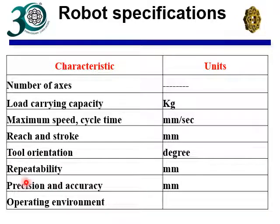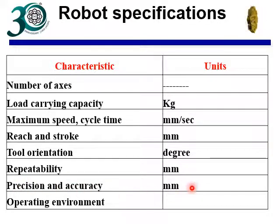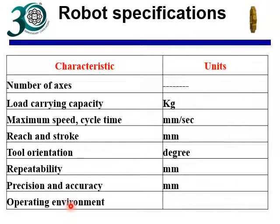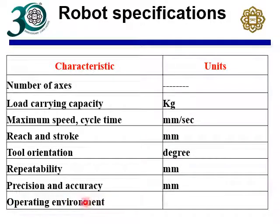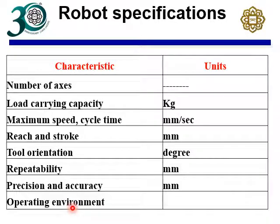Repeatability is very important and is measured in millimeters. Precision and accuracy are also very important. Operating environment is another consideration — whether you need a conditioned environment or temperature control. Usually for industrial robots there is no such requirement; they should be able to work in any normal shop floor environment.